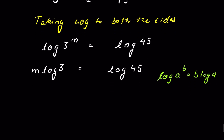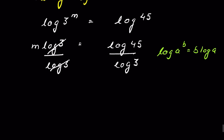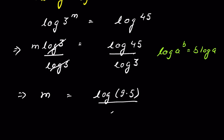Now let's divide both sides by log 3. So this and this get cancelled. Now m is equal to log 45, and we can write log 9 times 5 upon log 3.